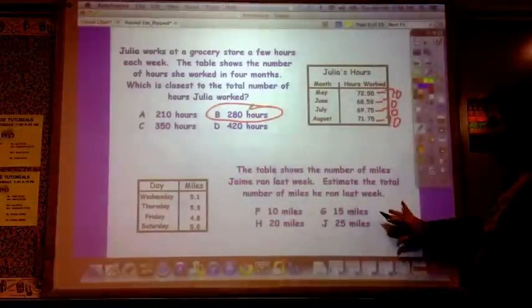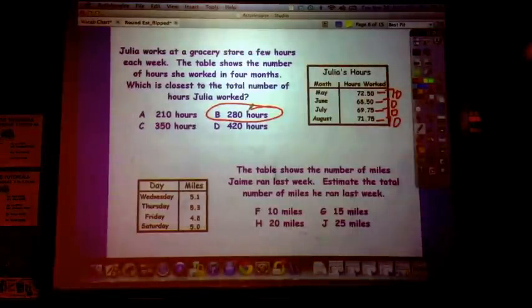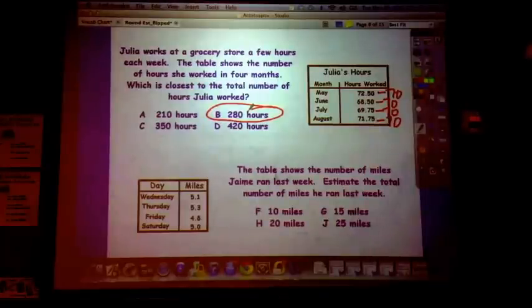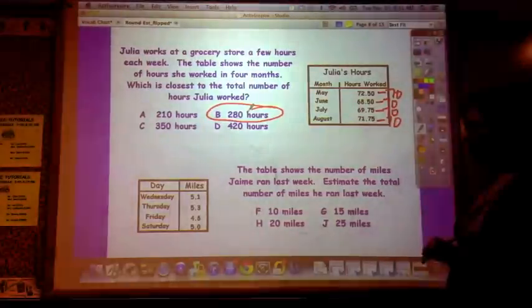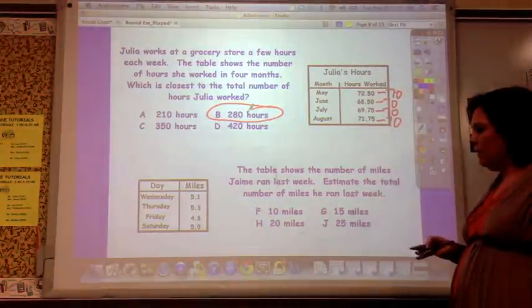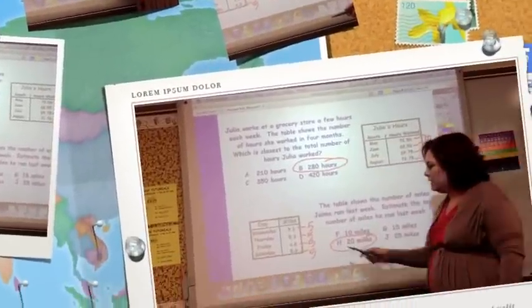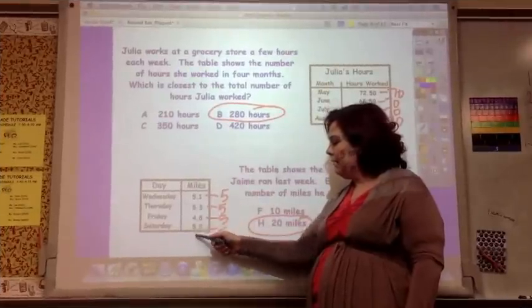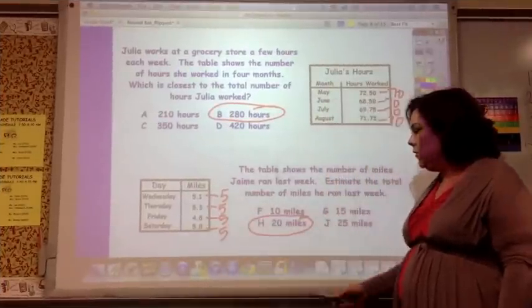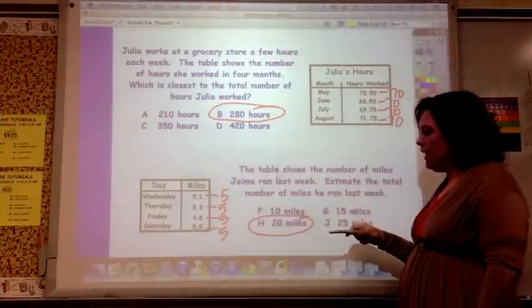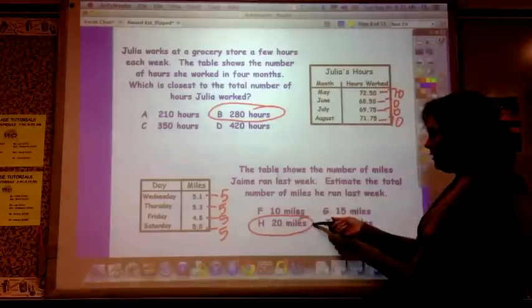So go ahead and do this one. The table shows the number of miles Jamie ran last week. Estimate the total number of miles he ran last week. So estimate those and come up with a number. So you can see this is a little bit more than five, a little bit more than five, a little less than five, exactly five. So you can say about five each day. And five times four is twenty.